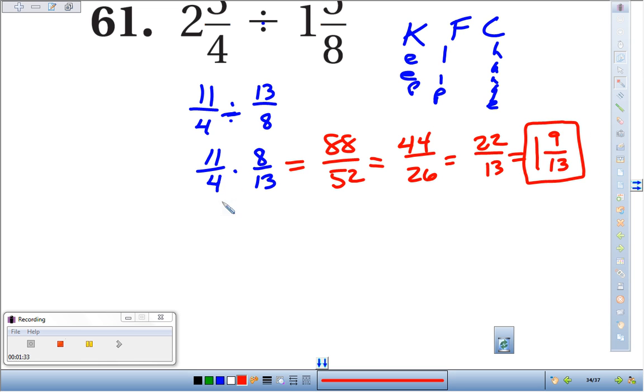Now, you could have also helped yourself reduce it right away by recognizing 8 on top and 4 on bottom. They're both divisible by 4. So divide this by 4, you get 2. Divide this by 4, you get 1. In the numerator, 11 times 2 is 22. Denominator, 1 times 13 is 13, which, at this point, is the same right there. You'll end up at 1 and 9 thirteenths.